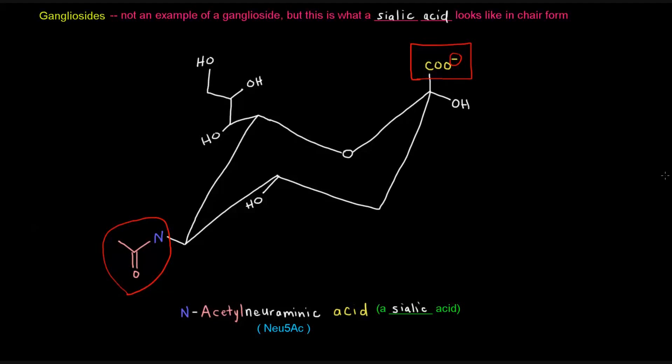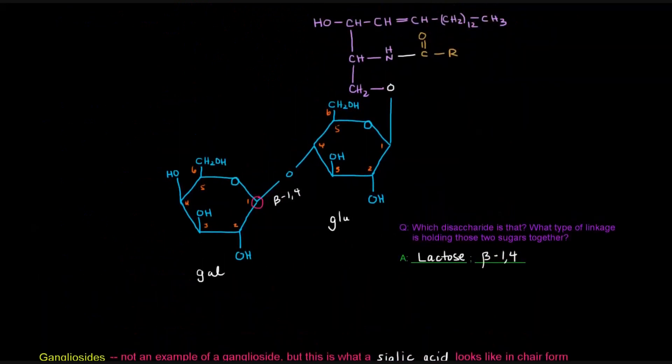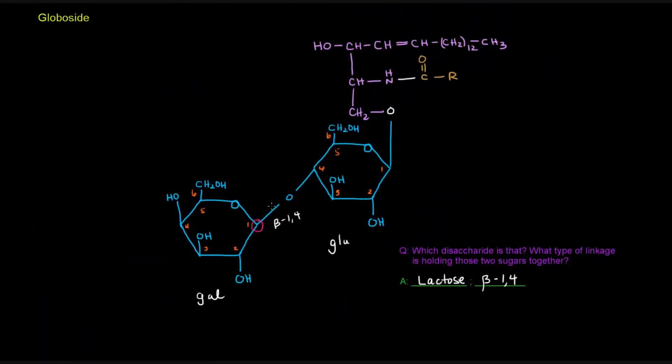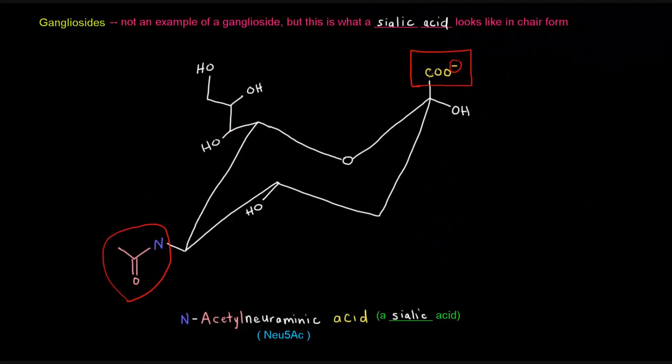So if you see a cerebroside, that's just something that has at least two sugars attached as the polar head group. And then if you see two or more sugars and you see something like this, if you see a carboxylic acid portion attached to a chair that looks like this, then you have a sialic acid attached to the oligosaccharide polar head group. And in that case, you would have a ganglioside.